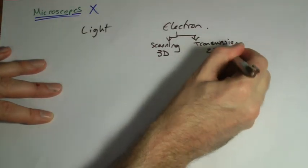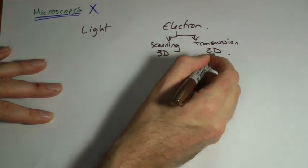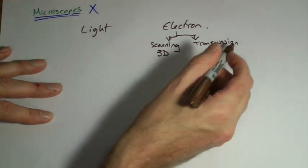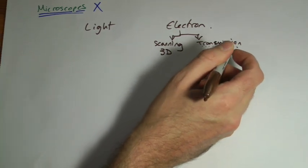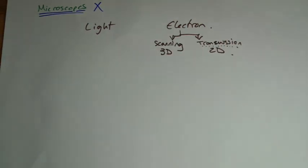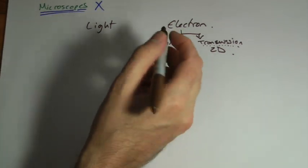In this one they kind of scatter off the outside. That gives you 2D pictures but it allows you to get in much much closer, and usually when you talk about electron microscopes these are the ones that you're thinking about. So bits to think about here.